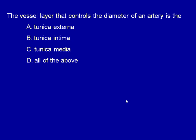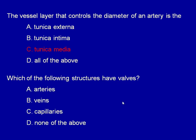The vessel layer that controls the diameter of an artery is the tunica media — that muscular layer. The veins have valves to prevent backflow.